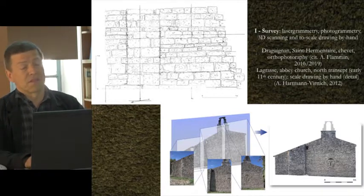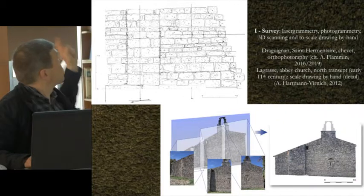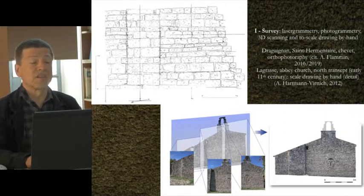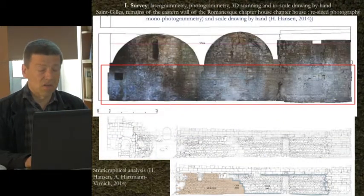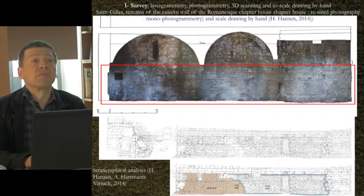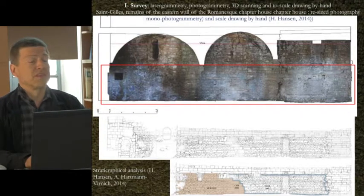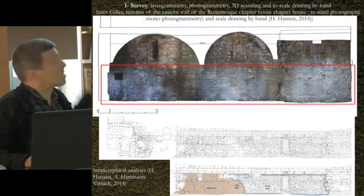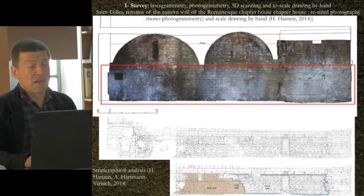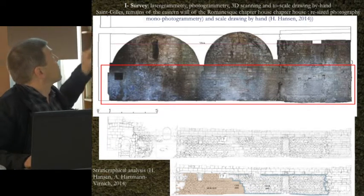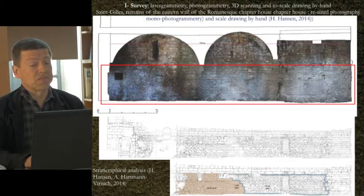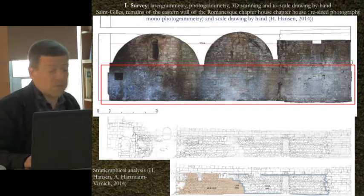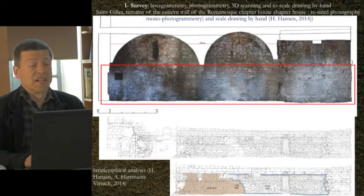We have two basic approaches here: the hand line — I give one of my own drawings — and of course now the basic survey method being photogrammetry, with a famous building like Saint-Ermenter-Draguignon. Just to show that both don't necessarily fulfill the same purpose: these are two documents done by Heike Hansen — a photogrammetric survey of a 12th-century wall — but it is so illegible that she also did a hand drawing, which is absolutely necessary for the very complex stratigraphy of this building.